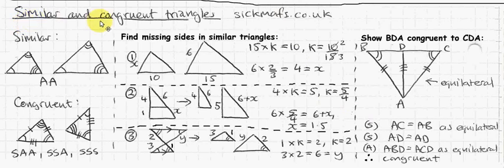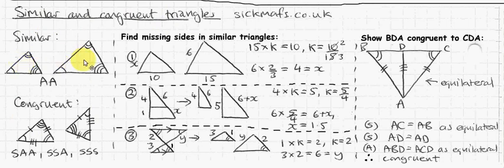This video is about similar and congruent triangles. These are similar triangles. Similar triangles are triangles that look similar but aren't quite the same — one is an enlargement of the other, or one is a shrunk version of the other. You can see everything looks exactly the same except for the sizes.